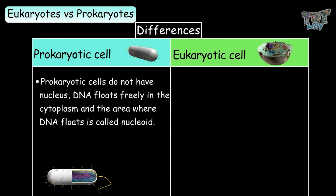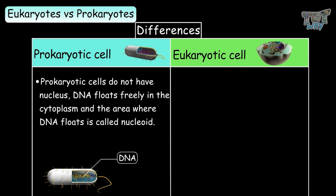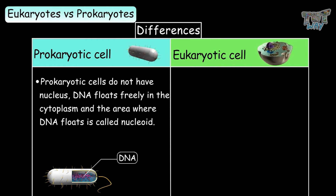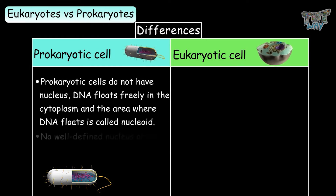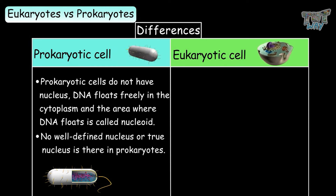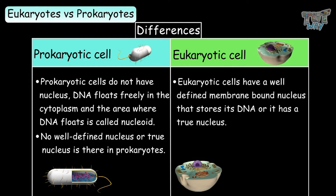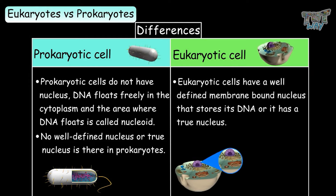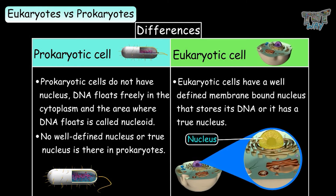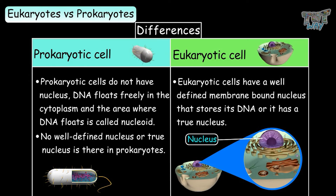Prokaryotic cells do not have a nucleus. DNA floats freely in the cytoplasm, and the area where DNA floats is called a nucleoid — no well-defined nucleus or pronucleus is present in prokaryotes. In a eukaryotic cell, there is a well-defined membrane-bound nucleus that stores DNA, meaning it has a true nucleus.